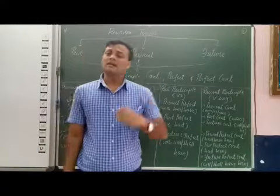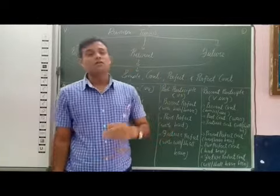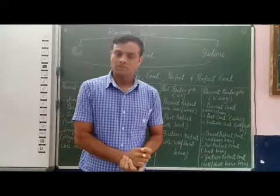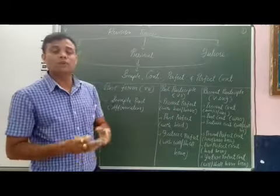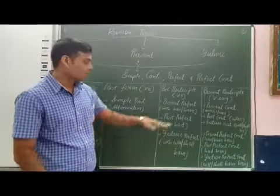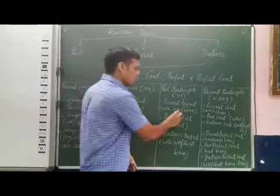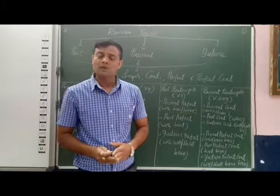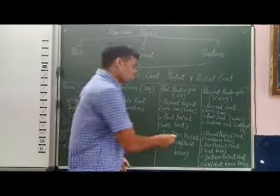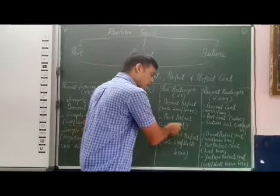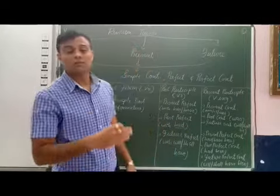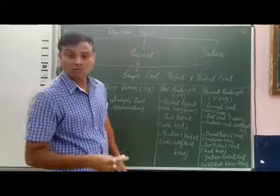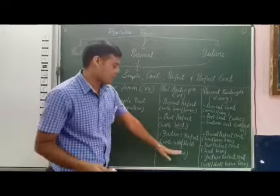In present perfect tense we use V3 with helping verb 'has' or 'have.' In past perfect we use V3 with helping verb 'had.' And in future perfect tense we use V3 with 'will' or 'shall have.'